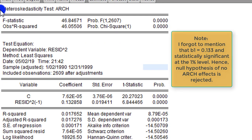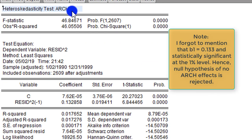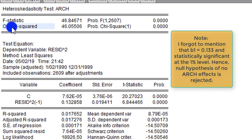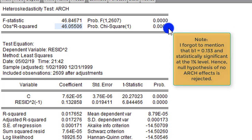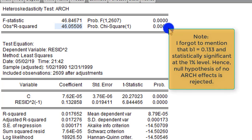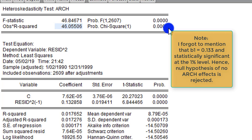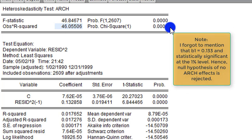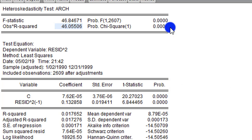Here we have the output for the Heteroskedasticity Test for ARCH, and we are concerned about this line: the Obs times R-squared and the statistics and their respective p-value. We can see the LM statistic is 46.06 approximately, and the probability value for that statistic is statistically significant at the 1% level, very significant.